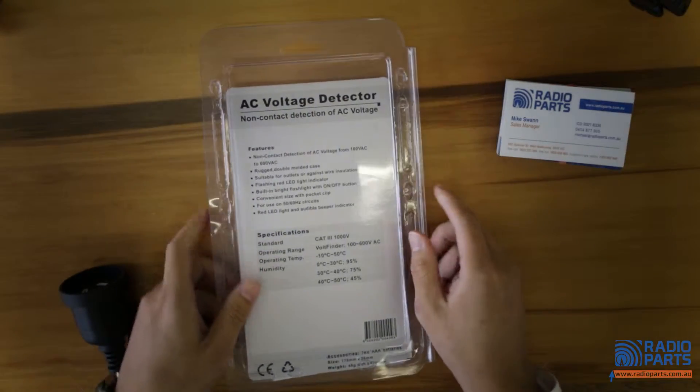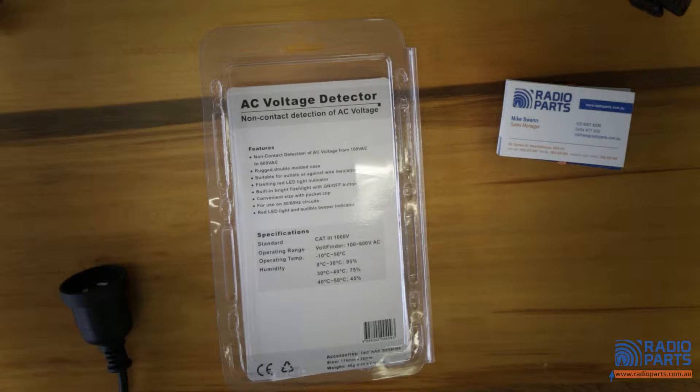Now let's have a look at the specifications of this product. As you can see, the operating range is from 100 volts to 600 volts and the working temperature and humidity is pretty common, which means it's totally capable for your daily use unless you're testing the power source for Eskimos in the ice cube.